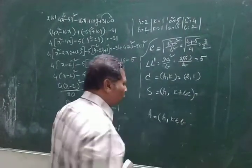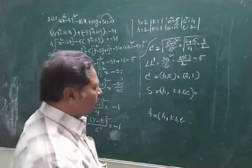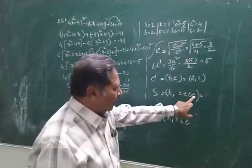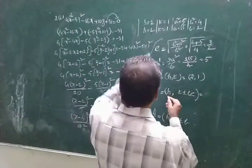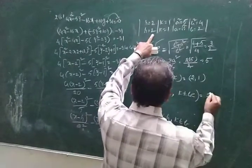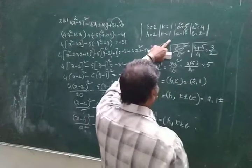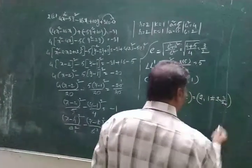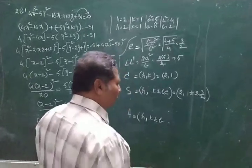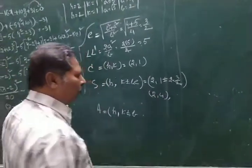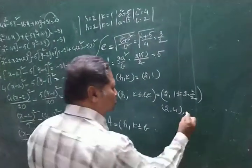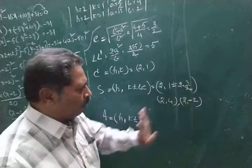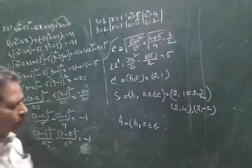Foci: h comma k plus or minus b times e. With h equals 2, k equals 1, b equals 2, and e equals 3 by 2: k plus b times e gives 1 plus 3 equals 4, and k minus b times e gives 1 minus 3 equals minus 2. So foci are 2 comma 4 and 2 comma minus 2.